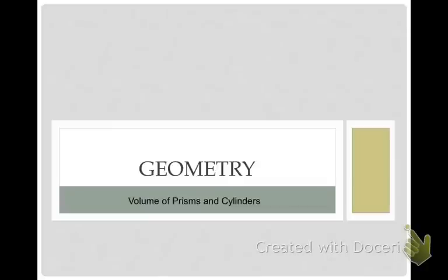Now that we know how to find the area of polygons, we're going to talk about finding volume and sometimes surface area of solids. And the first solids that we're going to look at are prisms and cylinders.